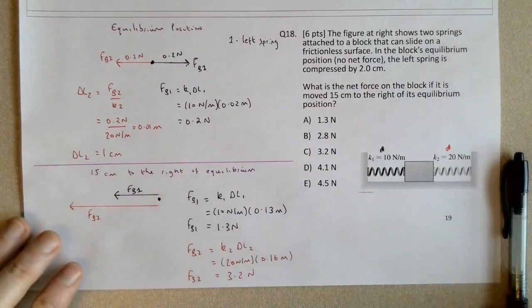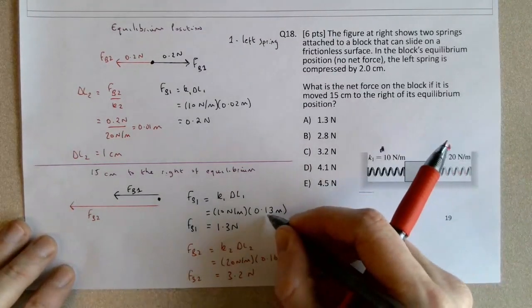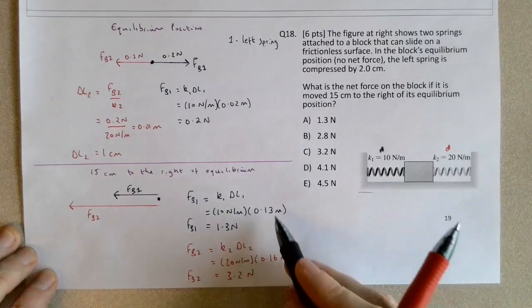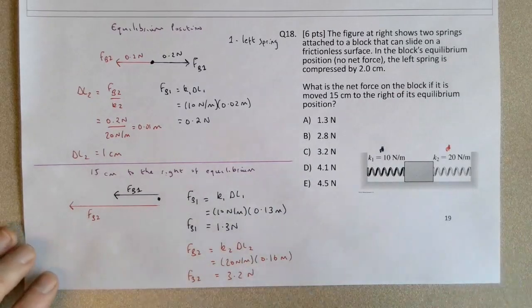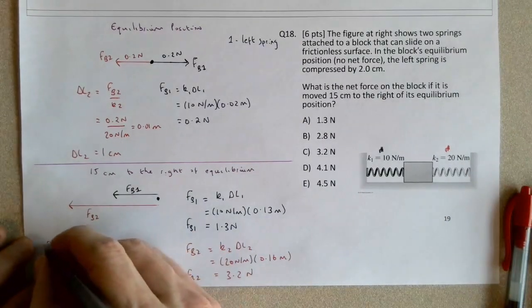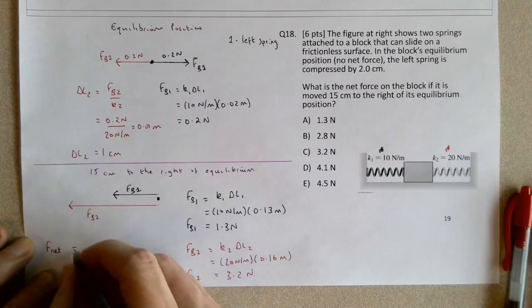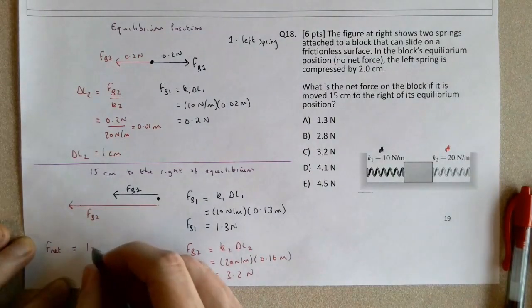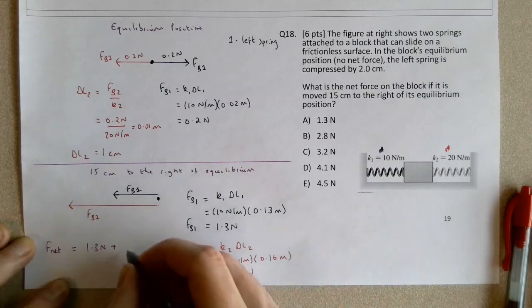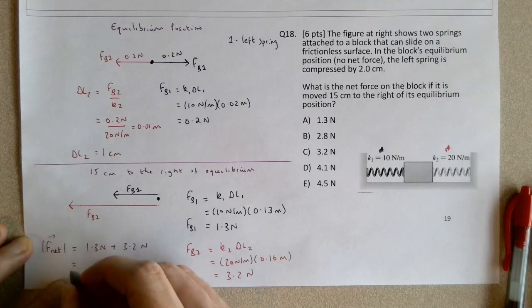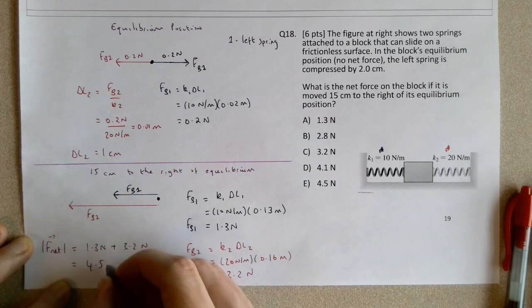So again, the harder part of this problem is probably thinking about the 0.13, figuring out the distance and figuring out the compressions and stretches of the springs. So we can now find the net force. They're both in the same direction, so we can sum them, and they're both to the left. So we have 1.3 newtons plus, this is the magnitude, so the magnitude is going to be equal to 4.5 newtons.